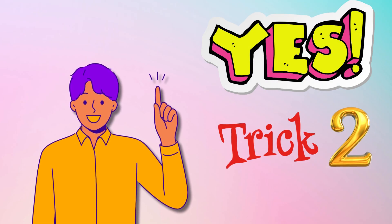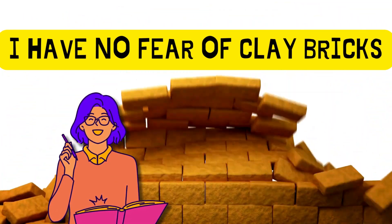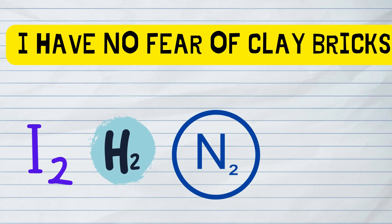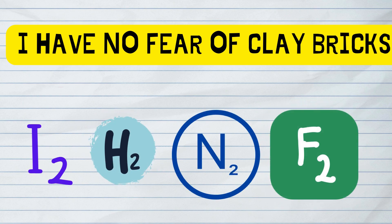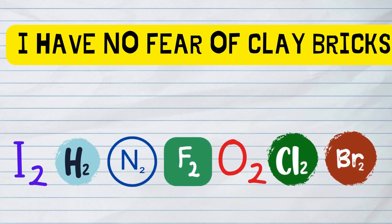Here is trick two. Remember them easily with the mnemonic I have no fear of clay bricks. I for iodine, H for hydrogen, N for nitrogen, F for fluorine, O for oxygen, Cl for chlorine, and Br for bromine.